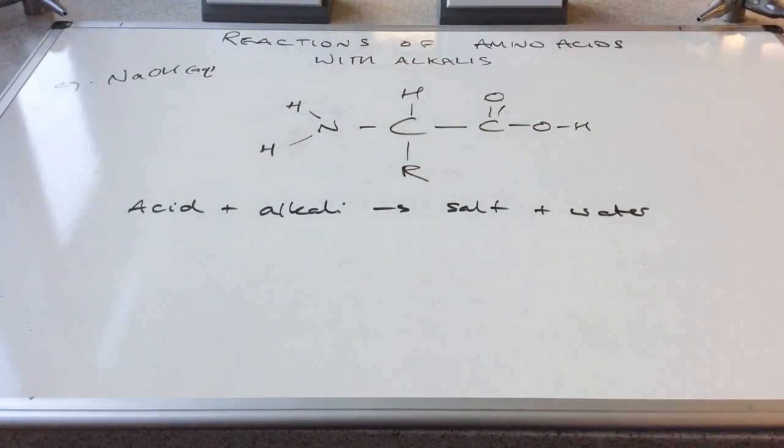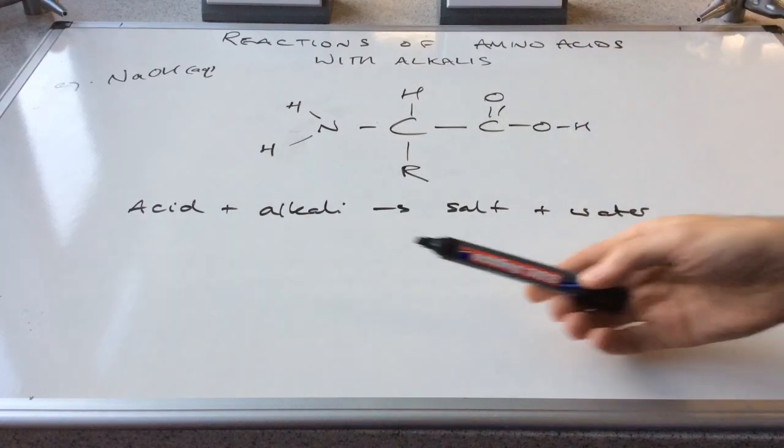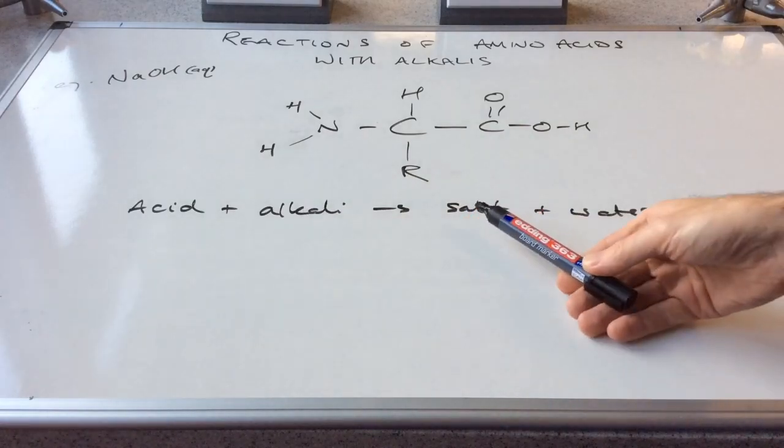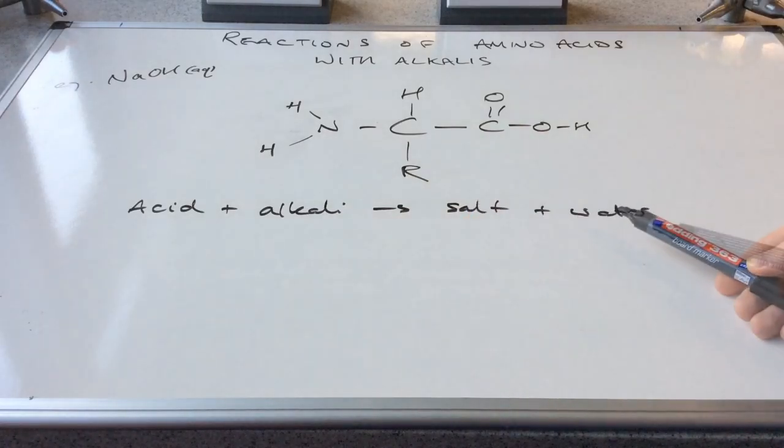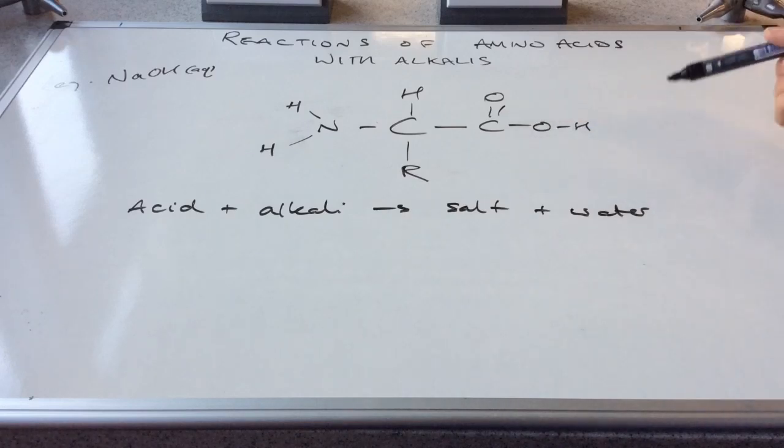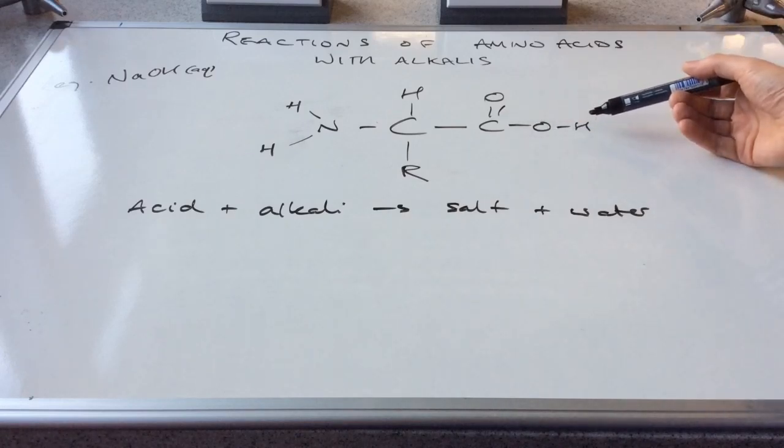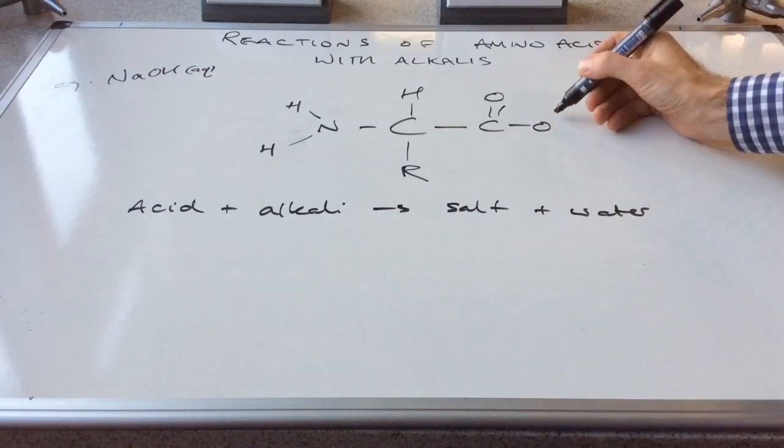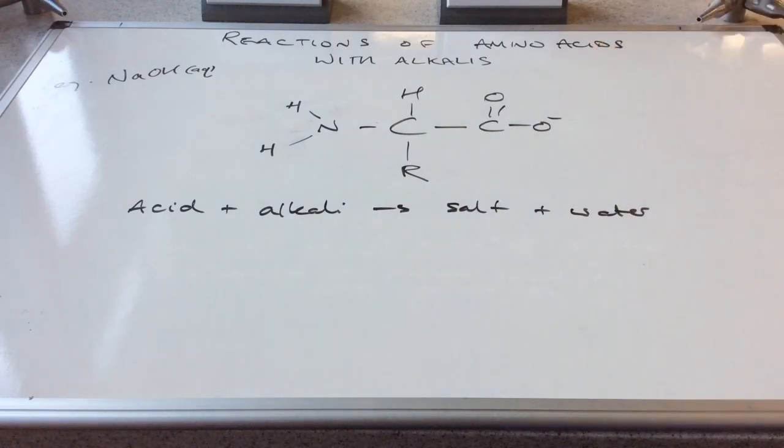So if we go right back to basics, first of all, the carboxylic acid can react with an alkali and it will make a salt and water. So how does it do that? This part here is an acid. This is a proton donor. And so this H+ will come off, will be donated, and it will leave behind a negatively charged ion. So that H+ now has been donated.